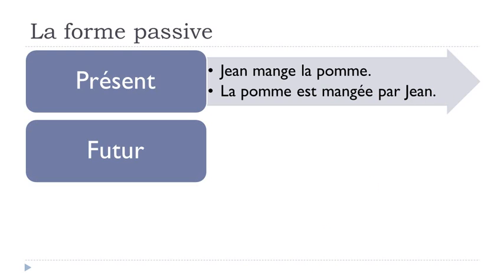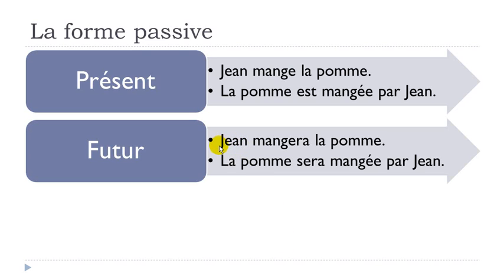Now let's see le futur. Jean mangera la pomme — mangera means 'will eat.' If you change it to the passive form: la pomme sera mangée par Jean. Sera is the future form of être — that's the only thing that changes. You should definitely know all the forms of être by heart because you will have to use them, for instance in this passive form.